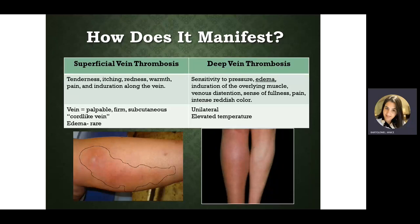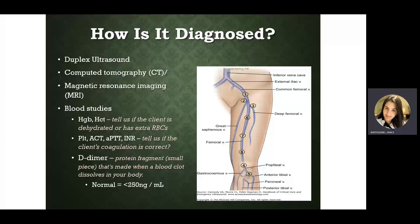The extremity becomes larger — if you measure the circumference of the leg or arm it will be bigger. The book discusses the Homans' sign test, where the client dorsiflexes their foot and if that causes pain in their leg it's considered positive for deep vein thrombosis, but that test is not very reliable. In the hospital, when a nurse suspects a blood clot, we call the physician and recommend ordering an ultrasound.